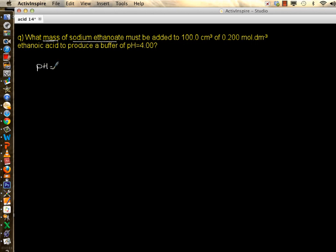pH is equal to pKa plus log of concentration of salt in numerator, concentration of your acid in denominator. pH is given to us as 4.0, pKa of ethanoic acid in the data booklet is 4.76, plus log of...